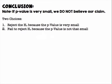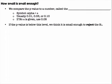For the conclusion, if your P-value is very small, we do not believe the claim. If the P-value is low, we reject the null hypothesis. We compare the P-value to a significance level called alpha. Typical alpha values are 0.01, 0.05, or 0.10. If no alpha is given, we use 0.05. If the P-value is below alpha, we reject the null hypothesis.